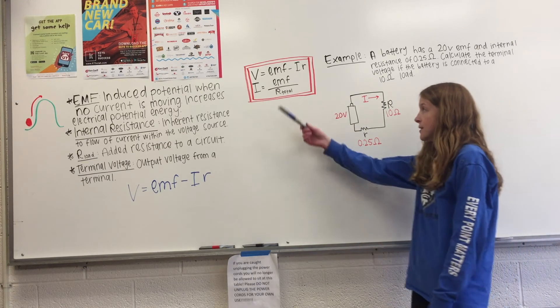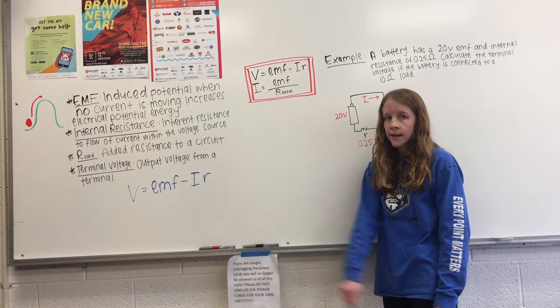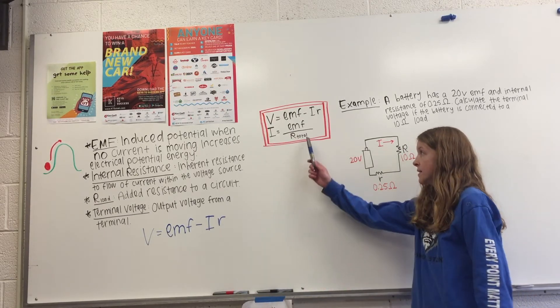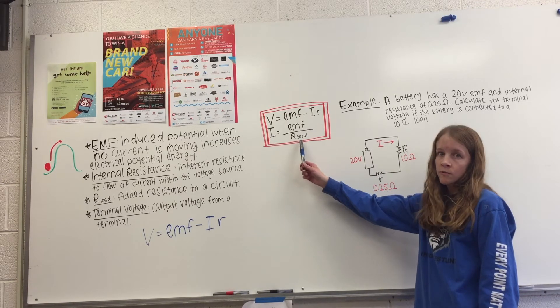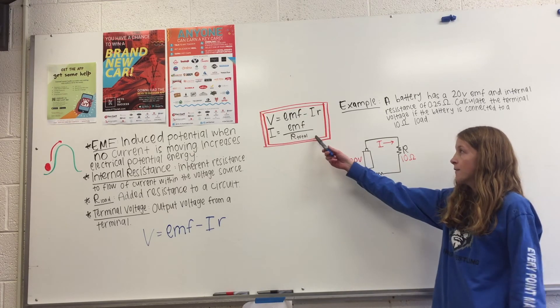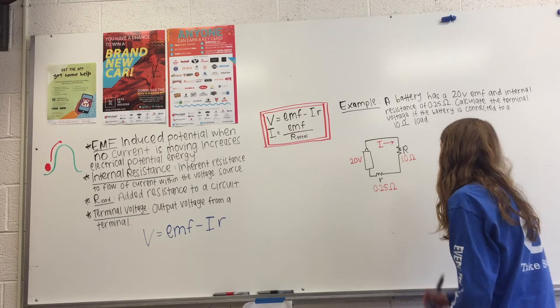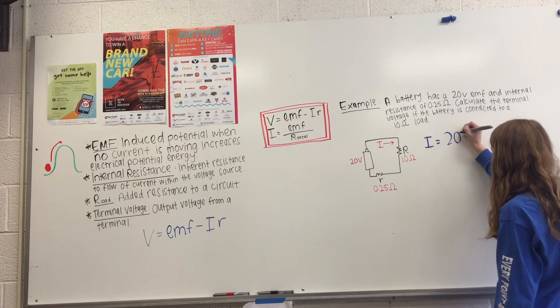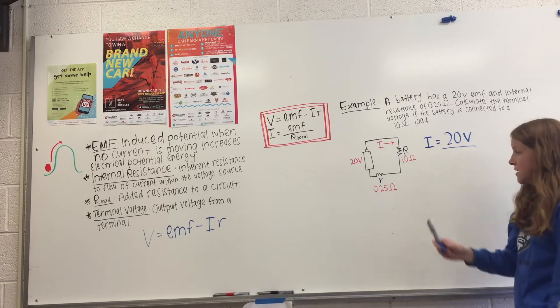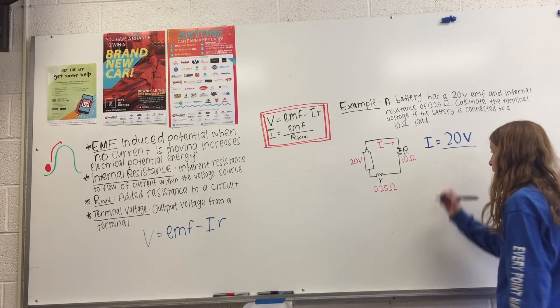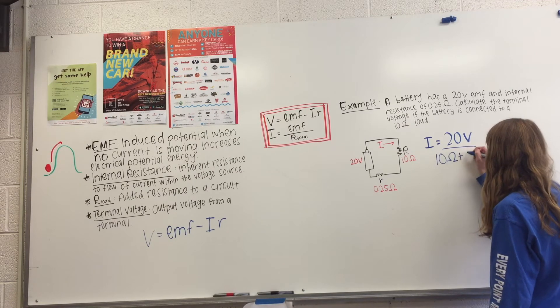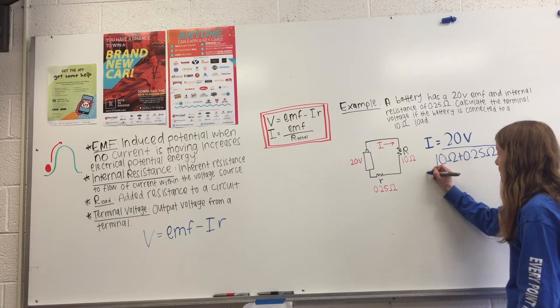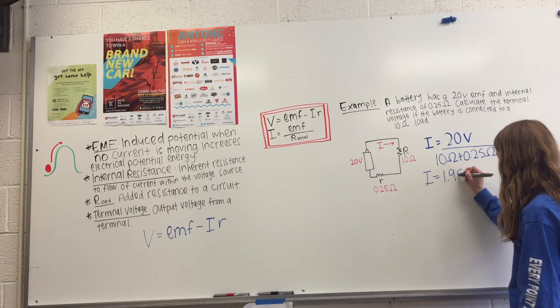And so we can do that by using these two equations. The first one, we already identified over here as the terminal voltage equals EMF minus IR. And then to find I, or the current, we have this equation from Ohm's Law, which is EMF over our total resistance. So we have our I is going to equal our EMF, which is 20 volts over our total resistance. And because these are in series, we can just add them together. So it's going to be 10 ohms plus 0.25 ohms. And if we plug that into our calculator, we get current equals 1.95 amps.